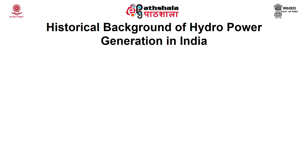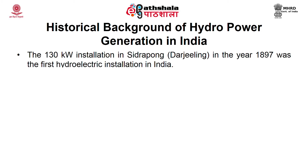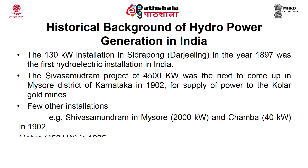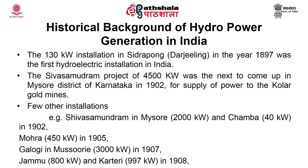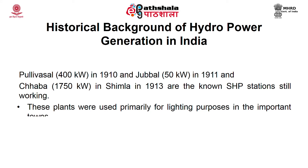The first hydroelectric installation in India was in the Darjeeling hills at Sidrapong in 1897, with a capacity of 130 kilowatts, followed by the Sivasamudram project in Mysore district of Karnataka in 1902. Other early non-small hydropower stations include Mohora, Galogi, Jammu, Karteri, Pullivasal, Jubbal, and Chabba — all still working and primarily used for lighting in their towns.